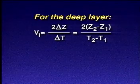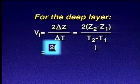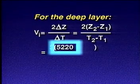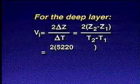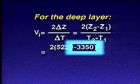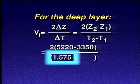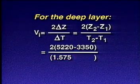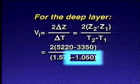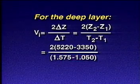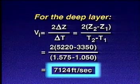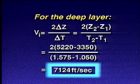For the deep layer, interval velocity equals 2 times 5,220 feet minus 3,350 feet, divided by 1.575 seconds minus 1.050 seconds, giving us an interval velocity of 7,124 feet per second.